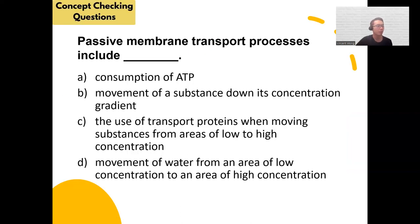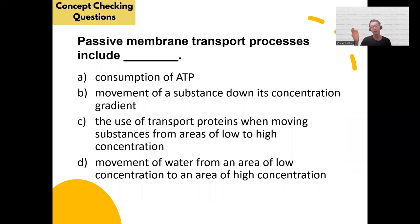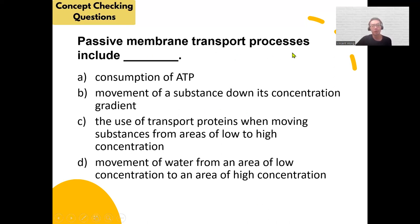Let's do a few poll questions. Passive membrane transport processes include which of the following? The answer is movement of substance down its concentration gradient — from high to low. Passive transport does not require ATP; that's only needed for active transport. 'Low to high' in any option signals it's incorrect. The choice about water moving from low to high concentration is also not correct — that applies only to osmosis, not passive transport in general.